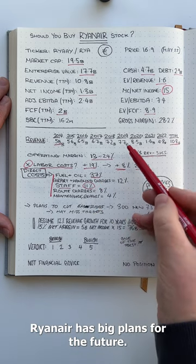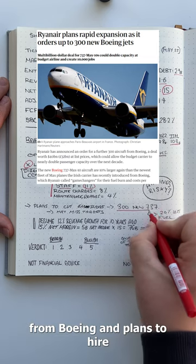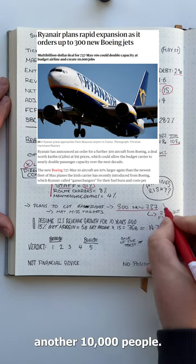It's ordered another 300 jets from Boeing and plans to hire another 10,000 people.